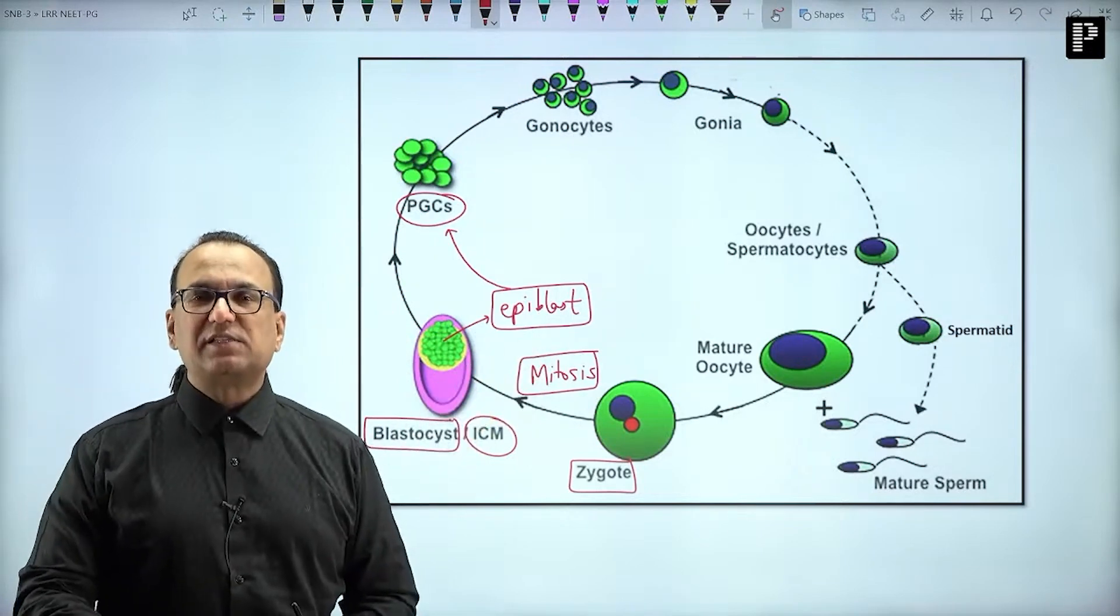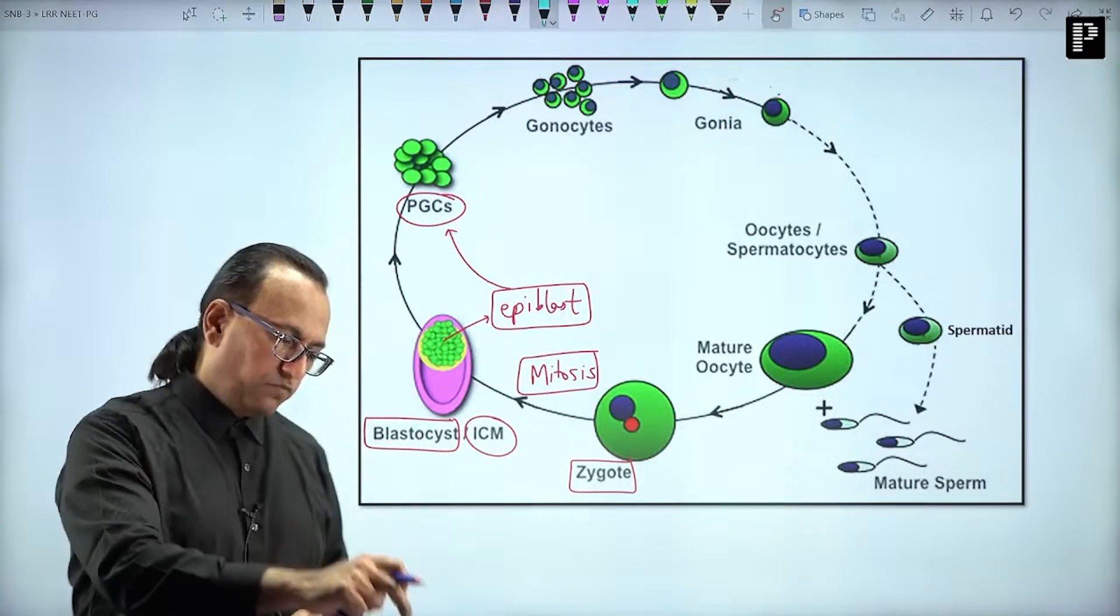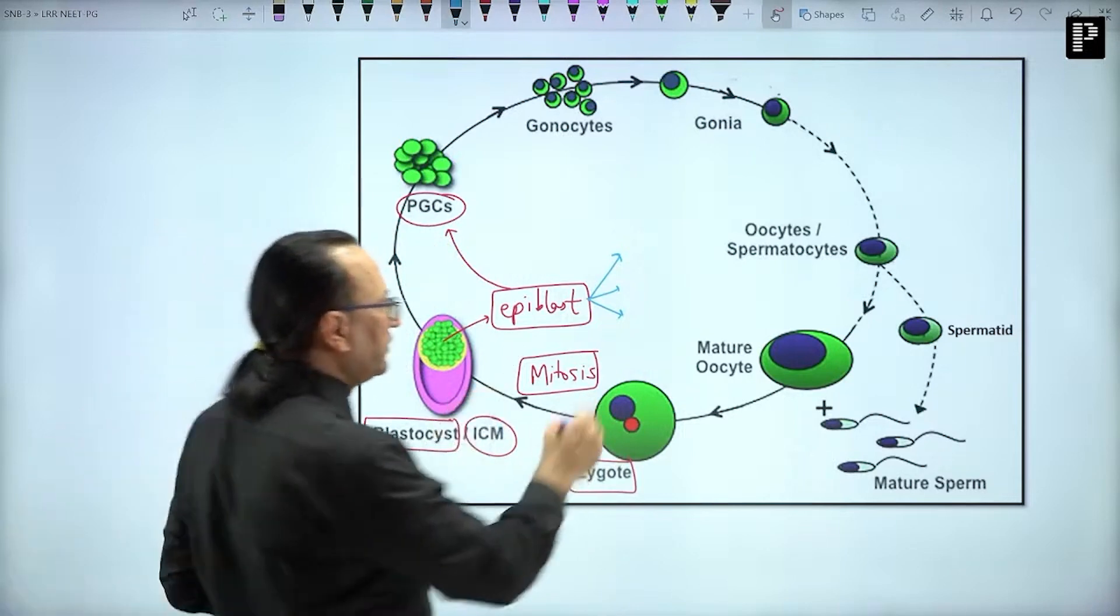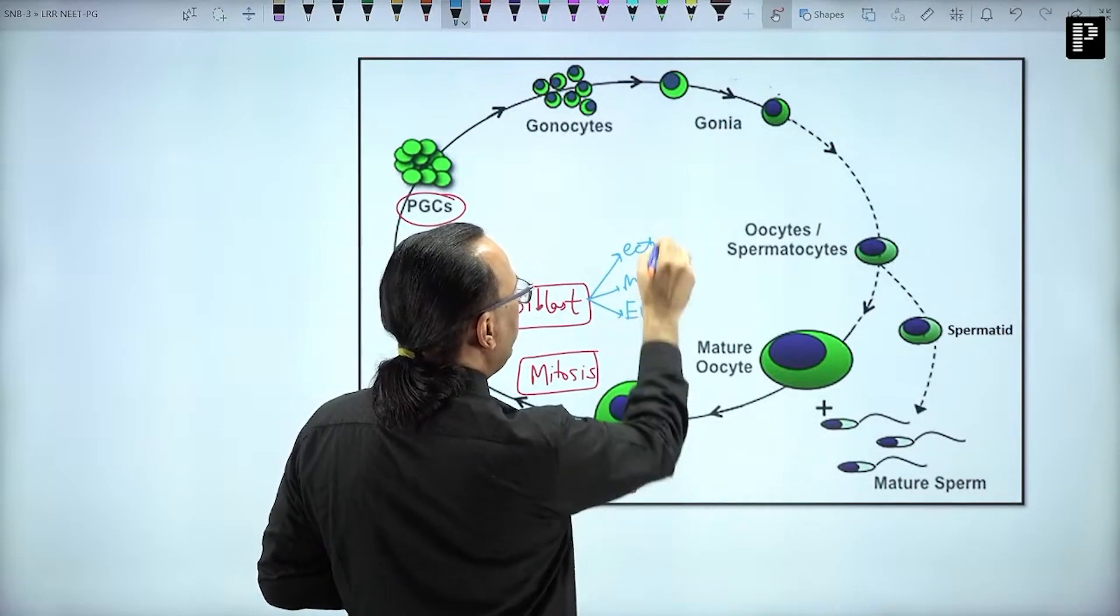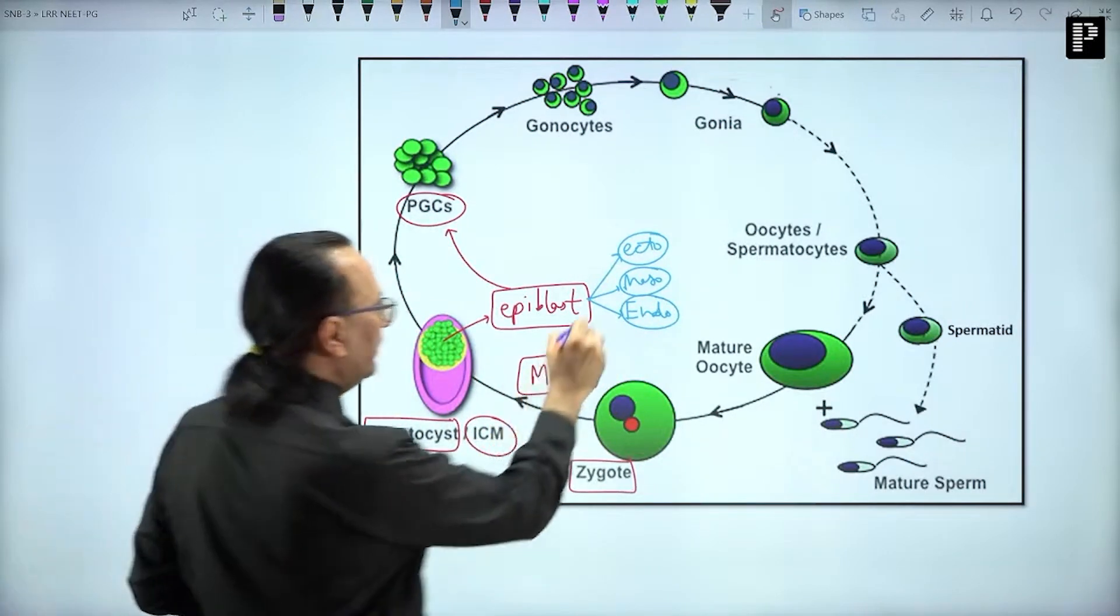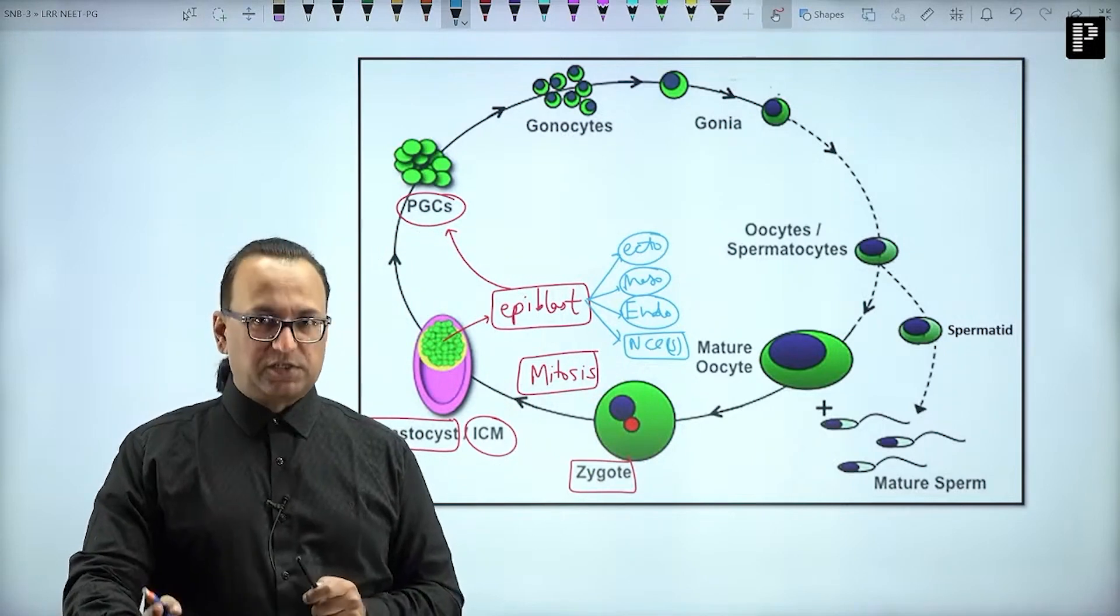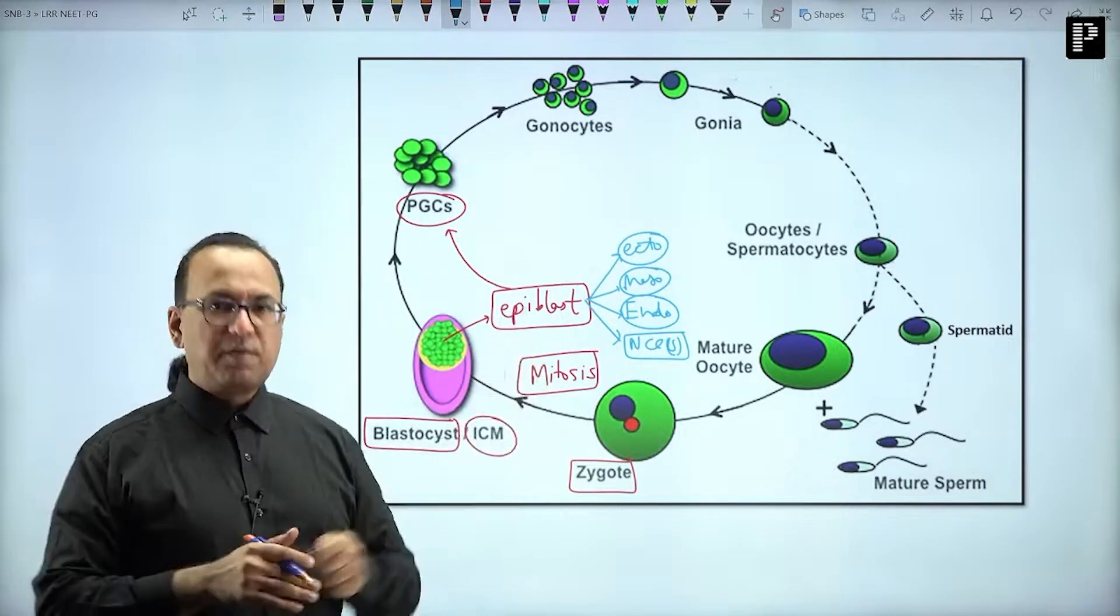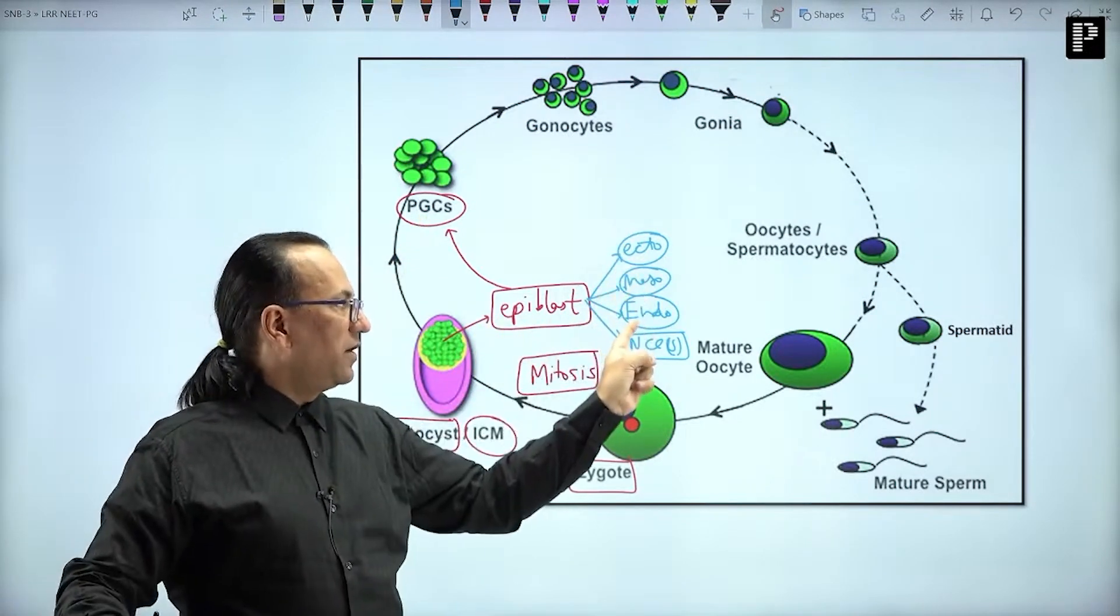They will ask you: primordial germ cells are derived from? Your answer: from the epiblast. Remember, epiblast is the cell which will form almost all the tissues, cells, structures in our body. It is the epiblast which will undergo gastrulation to form three germ layers: the ectoderm, the mesoderm, and the endoderm. There is a fourth germ layer also called neural crest cells, and even the fourth germ layer is coming from the epiblast. But before these germ layers are formed, the epiblast would have formed the primordial germ cell.